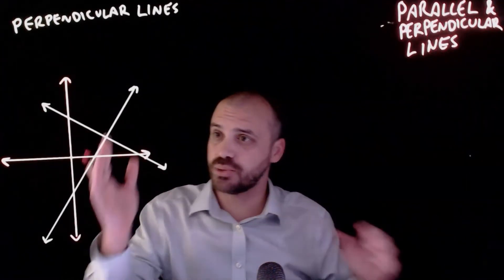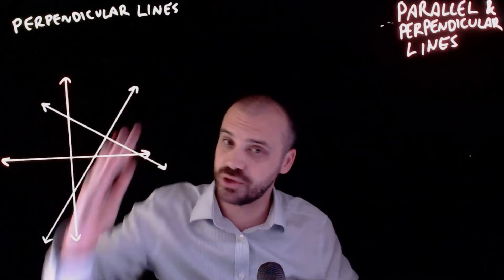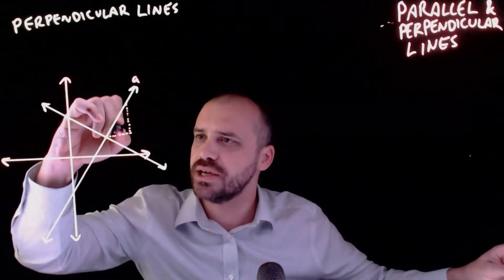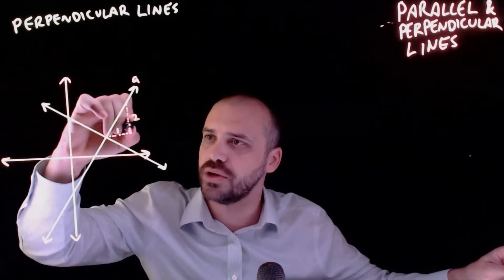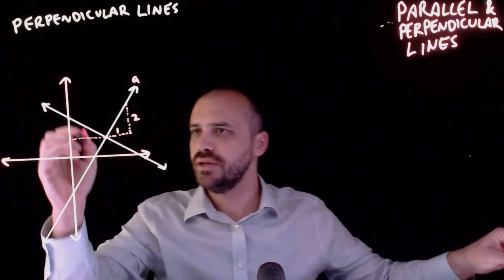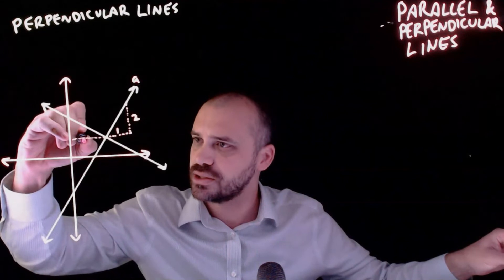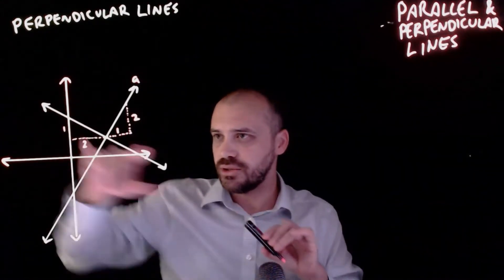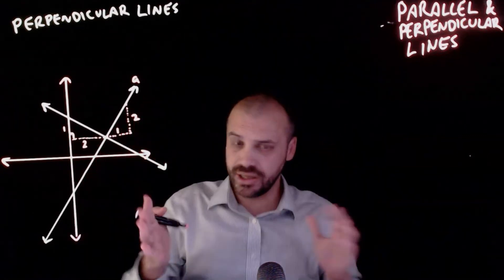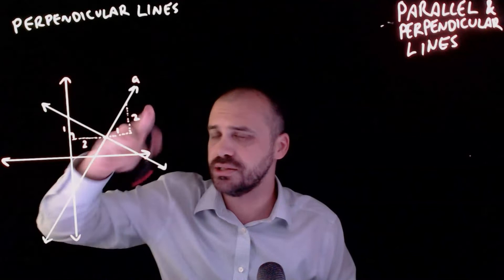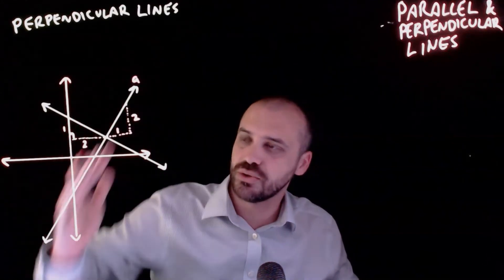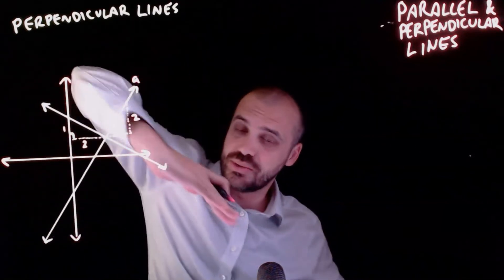Let's talk about the relationship between these two gradients. For line A, I've drawn a little triangle for rise over run, and this line goes one across and two up. I'll draw a similar triangle for the perpendicular line - two across and one up. You can see these triangles. Because of the way perpendicular lines are, we end up with the rise over runs switching places. Not only that, but one line always has a positive gradient and the other always has a negative gradient.